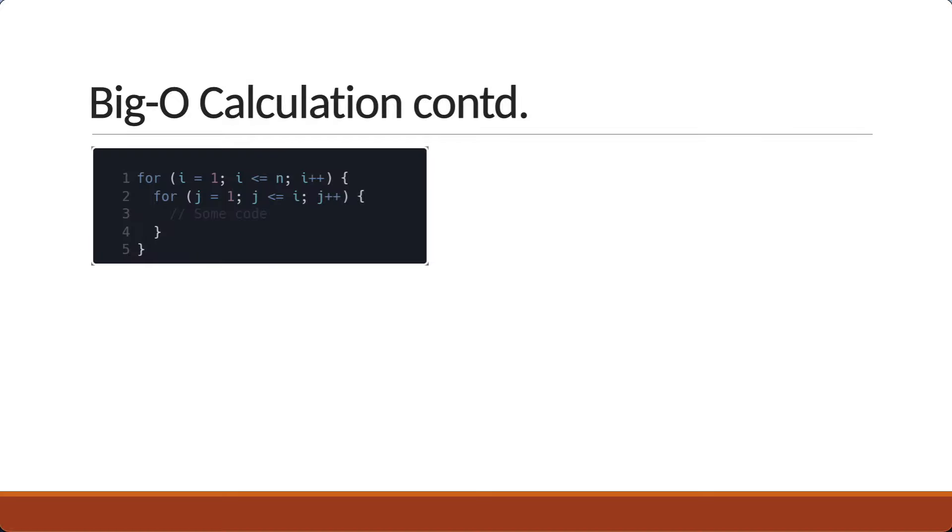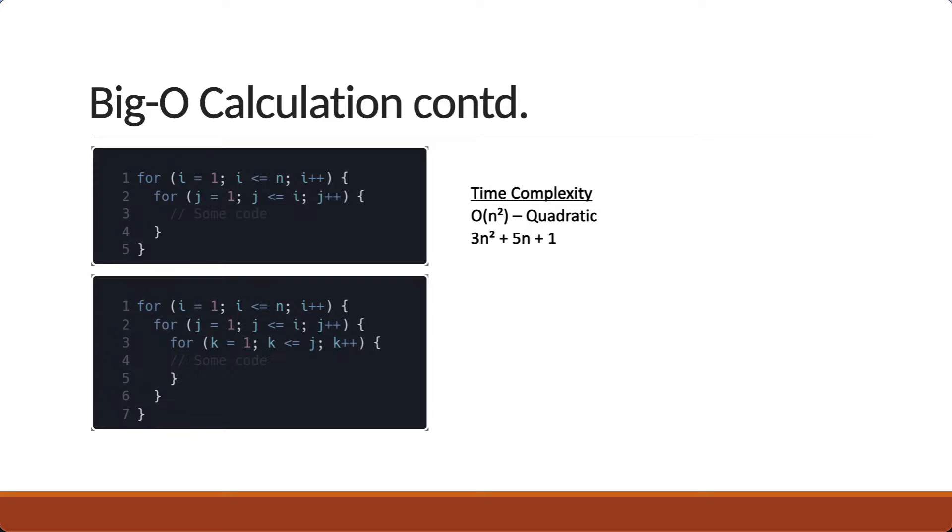For example, if there are two nested loops, the time complexity is quadratic. Once again, the Big-O notation drops the less dominant terms. If you calculate the complexity to be 3n² plus 5n plus 1, we narrow that down to just n² and call it quadratic. 100 million squared is so large compared to 5 into 100 that we can drop the latter term. Now if there are three nested loops, it is cubic. If the input size reduces by half every iteration, it is logarithmic. What we will be doing is determining the time complexity of the various algorithms we will be looking at throughout the series. So you will slowly but surely get the hang of it.